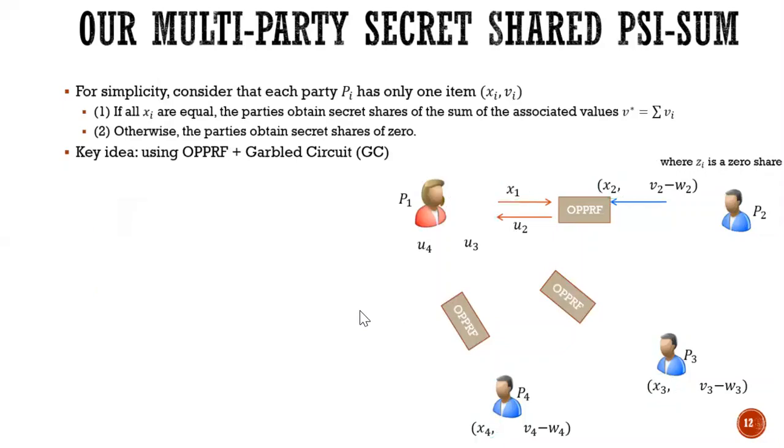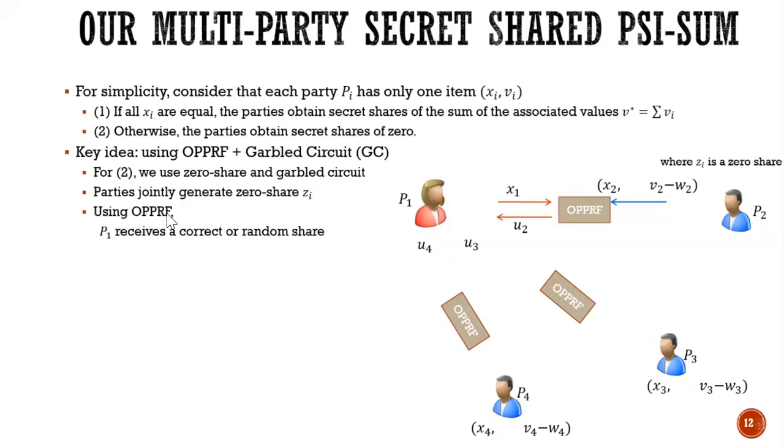So how do we do that? First, the parties jointly generate zero shares. So each party has zero share ZIs. And then we use OPPRF where, for example, P2 concatenates the Z2 together with V2 minus W2. Because of OPPRF, P1 obtains T2 and T2 equals Z2 if X1 equals X2 and random otherwise.